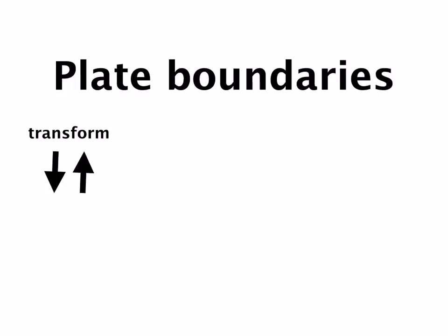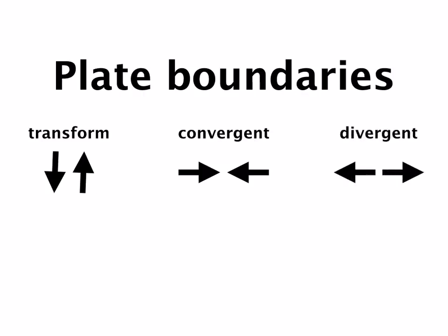Which brings us to those boundaries themselves. All of plate tectonics comes down to the fact that things happen when two plates interact with one another. It really boils down to three types of interactions, three types of plate boundaries. The first is known as a transform boundary, and that occurs when plates slide past one another. We also have convergent boundaries, where plates collide, and divergent boundaries, where they drift apart. You should be familiar with each of these and the kinds of things we see at each of them.